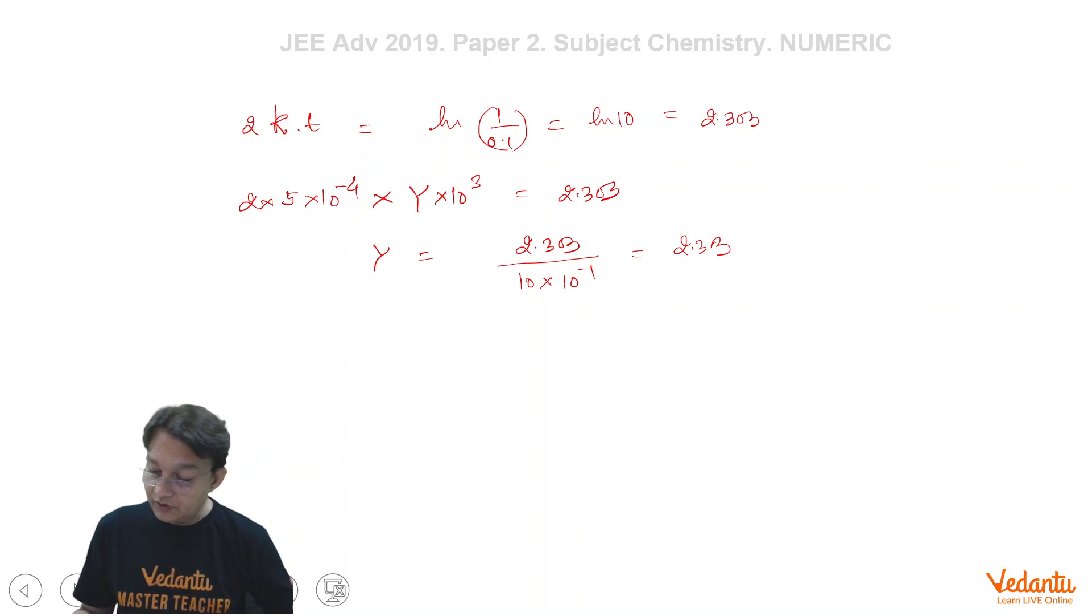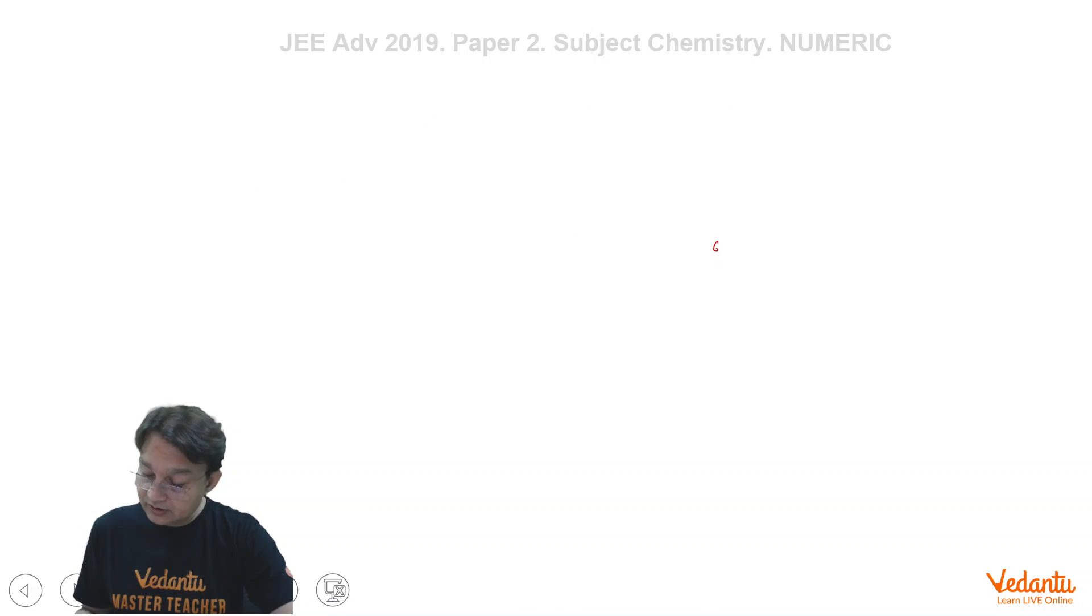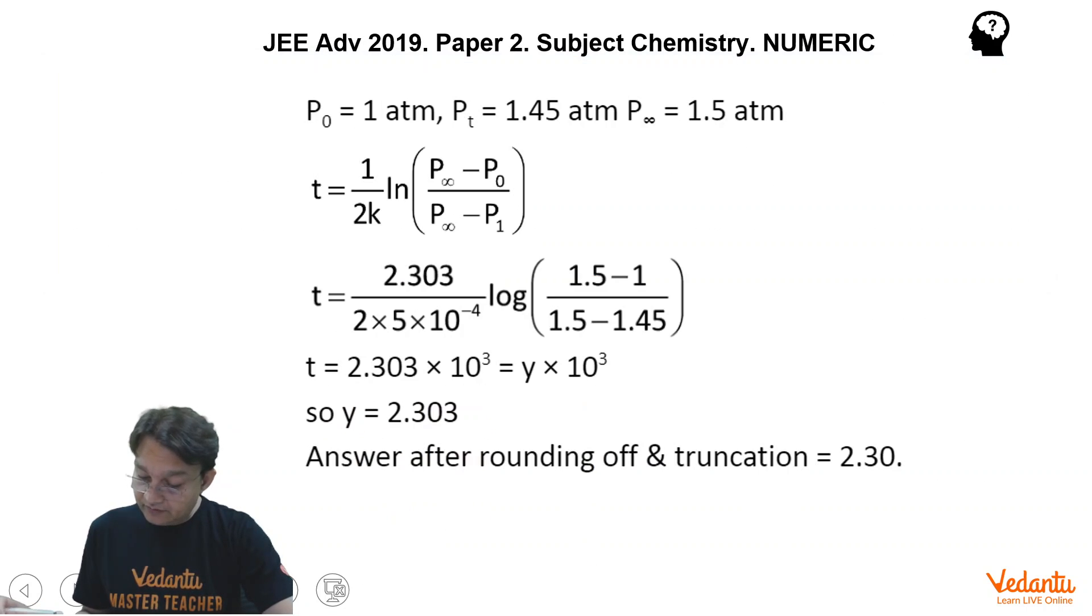So let's see what is there in the printed solution. That will be the answer. So t equals 2.303 × 10³, which is y × 10³. So y equals 2.303 and after rounding off and truncation, the answer is 2.30.